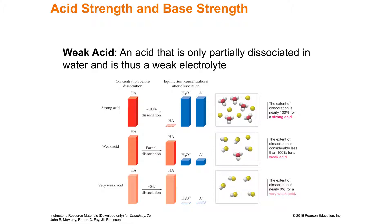A strong acid completely dissociates — dissociates means it breaks apart into ions. HA, how likely is that H to go away? The more likely it is, the stronger the acid. Once you put a strong acid in water, none of the original acid is left, because a strong acid completely dissociates into its conjugate base plus the hydrogen attaching to water to become hydronium. The extent of dissociation is nearly 100% for a strong acid.